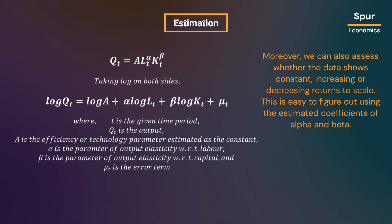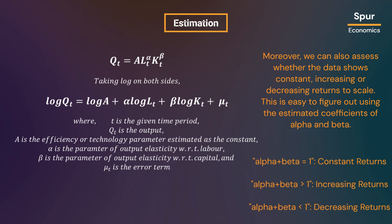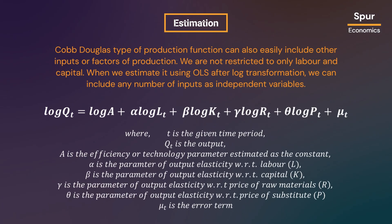Moreover, we can also assess whether the data shows constant, increasing, or decreasing returns to scale. This is easy to figure out using the estimated coefficients of alpha and beta. If the sum of the estimated alpha and beta is one, we have constant returns to scale. If the sum is greater than one, we have increasing returns. Conversely, the sum less than one indicates decreasing returns. The Cobb-Douglas production function can also easily include other inputs or factors of production beyond labor and capital. After log transformation, we can include any number of inputs as independent variables — for example, labor, capital, price of raw materials, price of substitutes, and other variables.